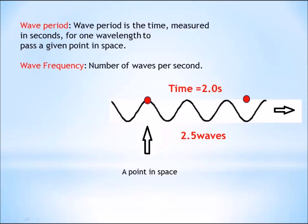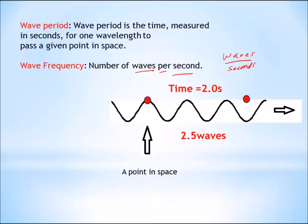With that information we should be able to calculate the wave's frequency. If you look at the definition for wave frequency, wave frequency is defined as the number of waves per second — waves divided by seconds. So if you divide the number of waves that pass a given point by the time it takes for the waves to pass, you will get the frequency of the wave in waves per second.